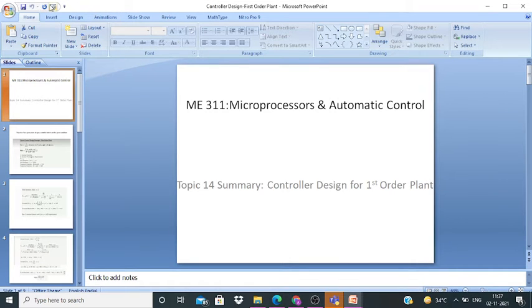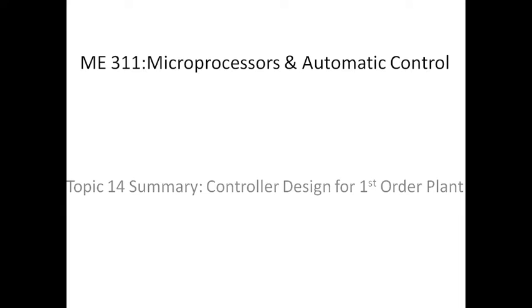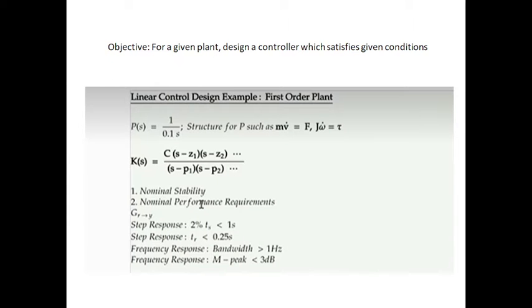Having built the concepts for design aspects, we'll now start the designing problem. We'll particularly start with the first-order plant. As discussed, plant models are usually pre-specified and we don't have control over them — what we can design are the controllers. The first-order plant could be of the form 1/(0.1s). One practical example could be mapped from velocity to force, or omega to torque.